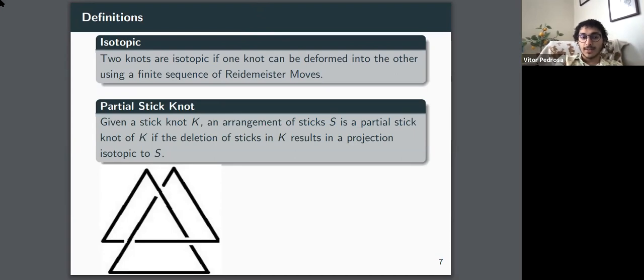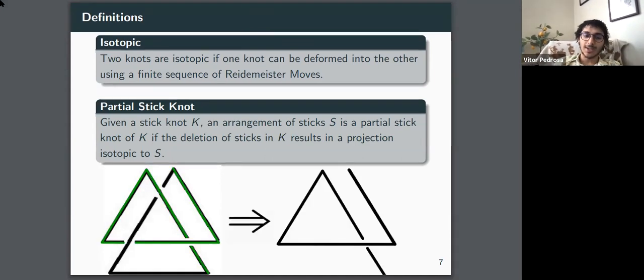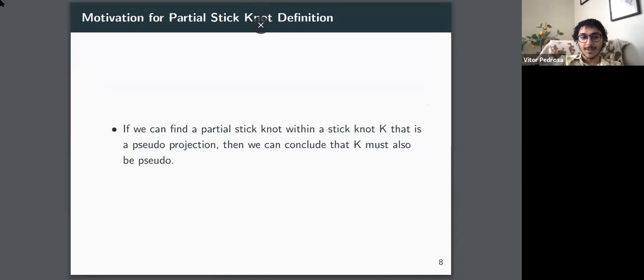Another definition that we came up with is a partial stick knot, which simply means that if we have a stick knot, for example, on the left-hand side, the trefoil knot, we can just select a few sticks of the collection and we can make a new knot of that. So for example, next one, next slide, we can select the green sticks, and we can make a new sub-collection that's just equivalent to it by selecting the sticks that we want to work with. Next. Please. Perfect.